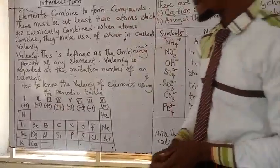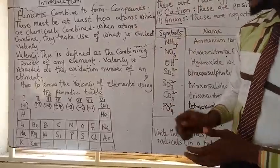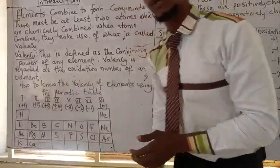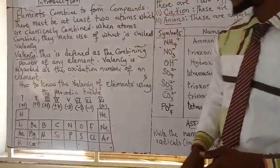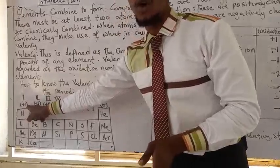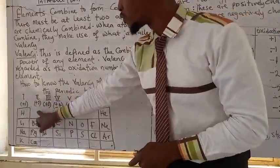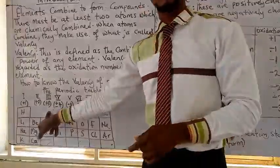If you look here on the board, you have the periodic table from group 1 down to group 8. So each group number is represented by the valency. For example, elements in group 1 have a valency of 1 or an oxidation number of plus 1. Elements in group 2 have a valency of 2. Group 3 have a valency of 3.